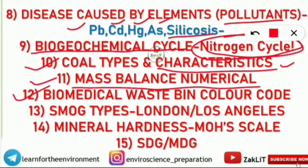Number twelve is biomedical waste bin color codes. For example, anatomical waste is segregated in yellow color bins, sharp waste is disposed of in white color bins, blue color bins, black color bins, and red bins. You should know which bin is used for which kind of biomedical waste disposal.